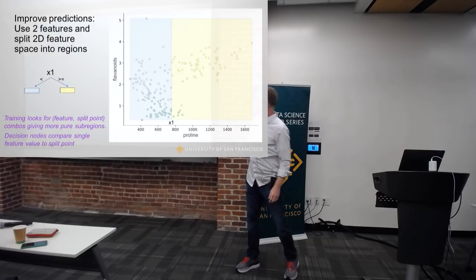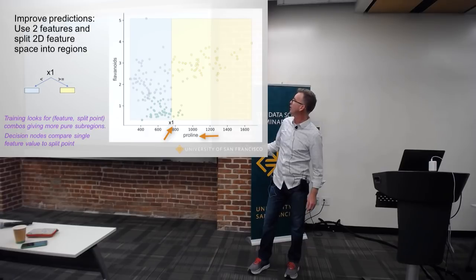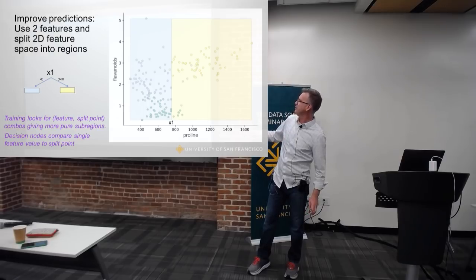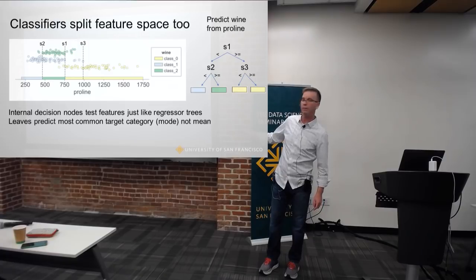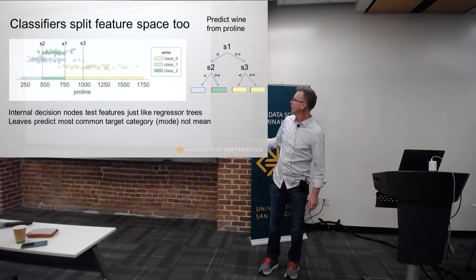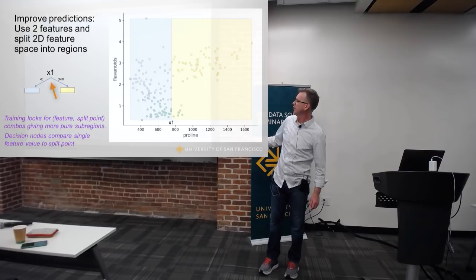The model in this case has decided to choose the proline amino acid as the feature to test, and this is the split point, because I get mostly yellow over here. If you project all of these down onto the x-axis, you will see this setup. So I get a simple tree that says: if your proline value is less than x1, predict blue wine; otherwise predict yellow wine.